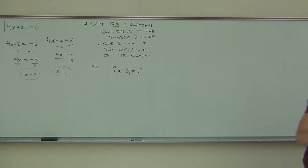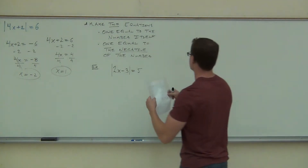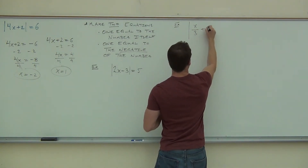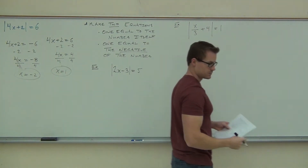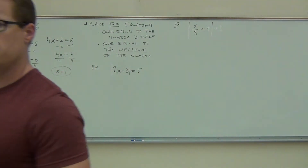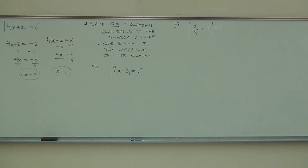If you get done with this one really quickly, why don't you try another one for me. We're going to work on this one together in a second. I'll be walking around — if you need a hand on this, let me know. This is absolute value. How many equations do you get with this absolute value problem? Two. How many equations are you always going to get with an absolute value problem? Two.